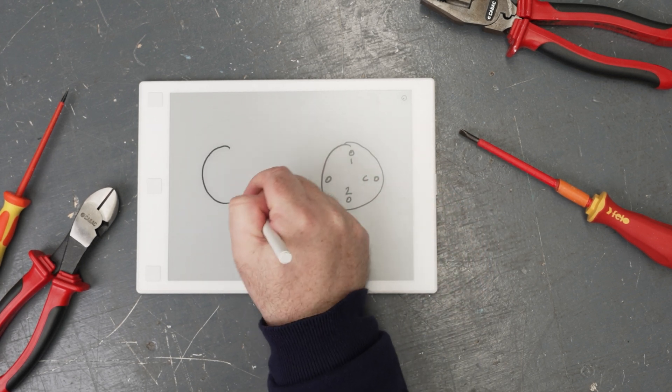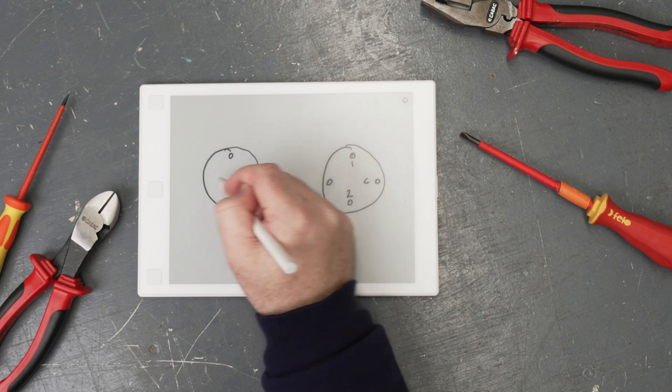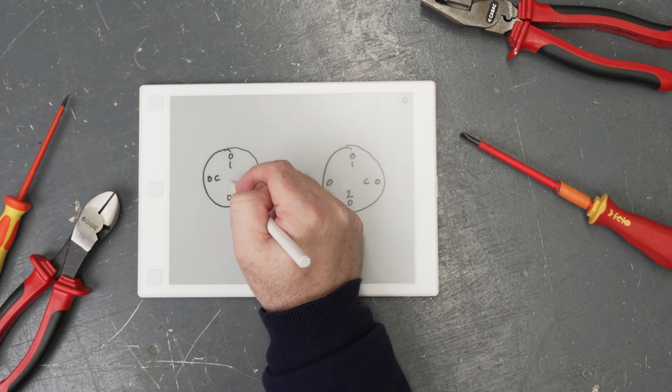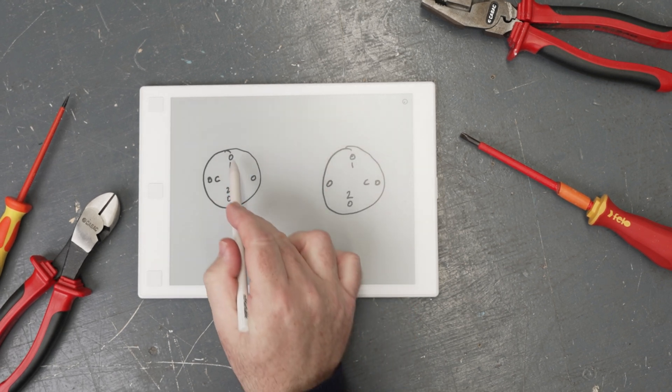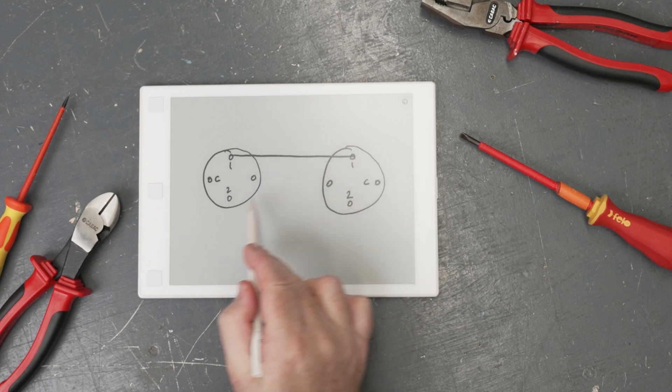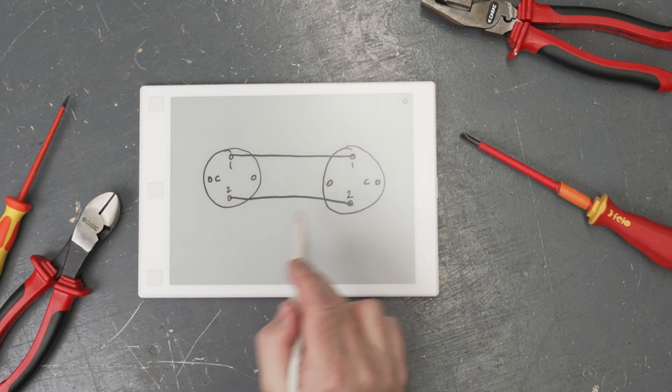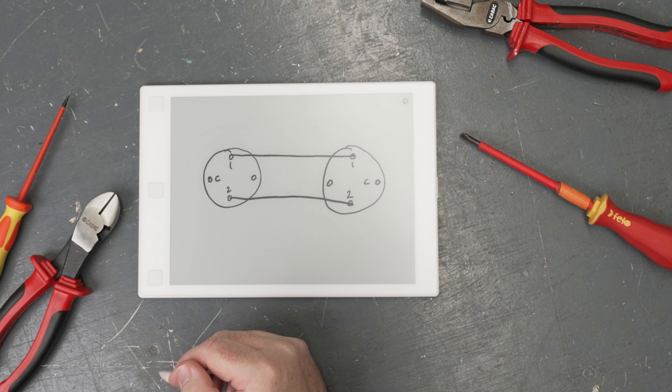Let's draw the other MEC in. Between the one and the one, we're going to have one conductor, and between the two and the two, the other conductor.